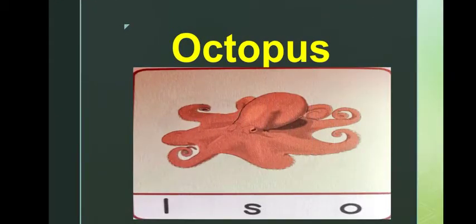Octopus. O-C-T-O-P-U-S. The first letter is O and the sound of letter O is O.